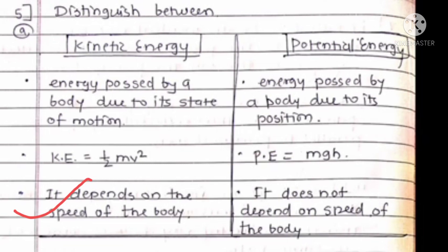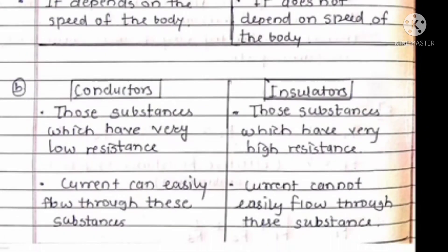Kinetic energy depends on the speed of the body while potential energy does not depend on the speed of the body. Conductors and insulators: Those substances which have very low resistance are known as conductors and those substances which have very high resistance are known as insulators. Current can easily flow through conductors while insulators current cannot easily flow through these substances.